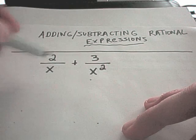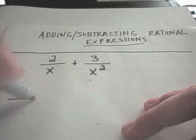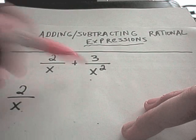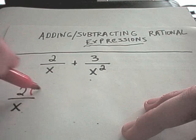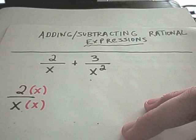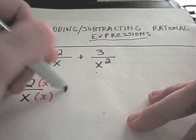So notice there's an x in the bottom of the left side and x squared in the bottom of the right side. Well, to get your common denominator, the least common multiple of x and x squared is x squared, so you'd have to multiply the top by x and the bottom by x of the first fraction. And then you wouldn't have to do anything at all to the other one.